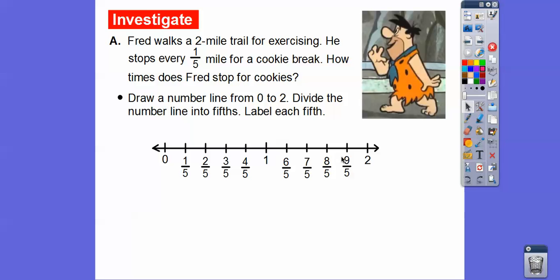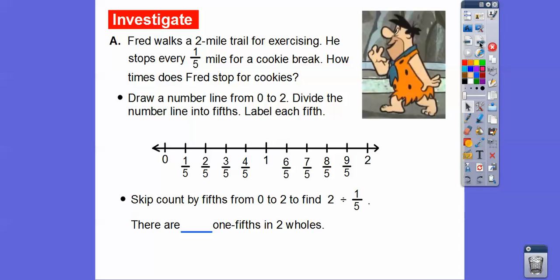All the way over to 9 fifths, and this would be 10 fifths right there. So there they all are labeled. We're going to skip count by fifths from 0 to 2 and find 2 divided by 1 fifth, because he walks two miles and every fifth of a mile he takes a cookie break. So how many spaces are there? Counting them all, there are 10 — this is 10 fifths right there. There are 10 one-fifths in the two wholes.